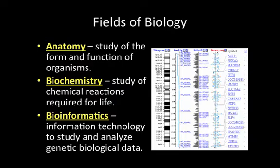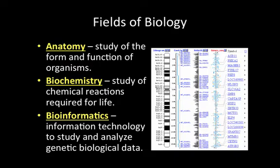Looking at just a few subfields of biology: anatomy is the study of form and function of organisms. This is where you would do dissections, study the different organs, muscles, bones, and the structure of an organism. Biochemistry — you can see two roots: bio meaning life and chemistry referring to atoms. We study chemical reactions and the composition of life in its chemical form, giving us a really good understanding of what's going on at the atomic level in life.